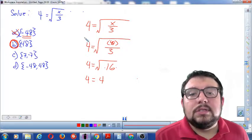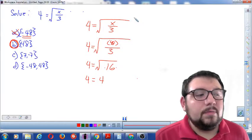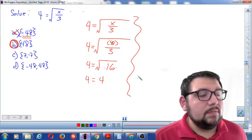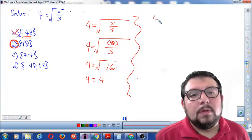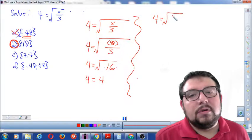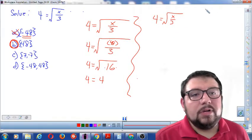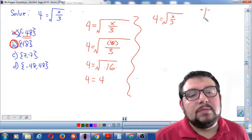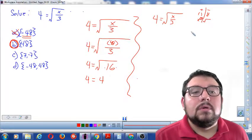All right, so you can see that the substitution method is very powerful, but you could also use the algebraic method, which is also very quick. 4 equals the square root of x over 3. I'll make my little equation map over here. Adding is canceled by subtracting. Multiplying is canceled by dividing. And squaring is canceled by the square root.